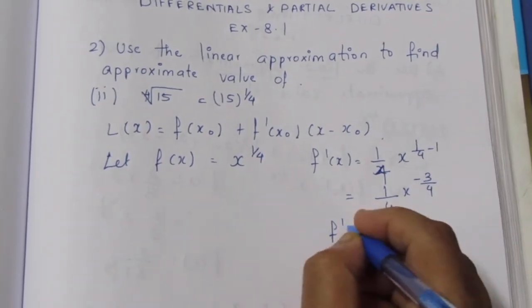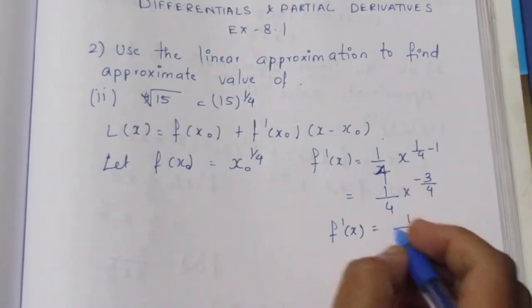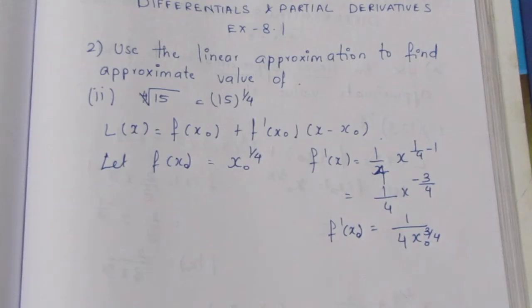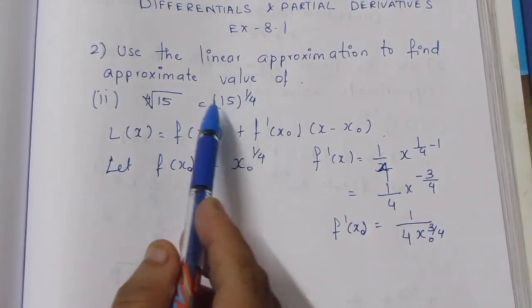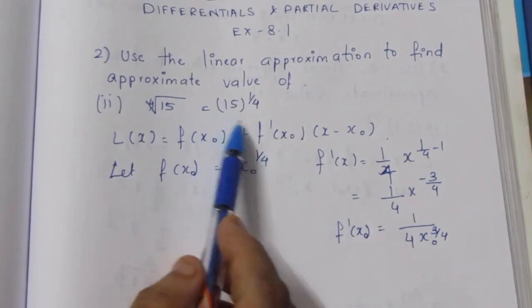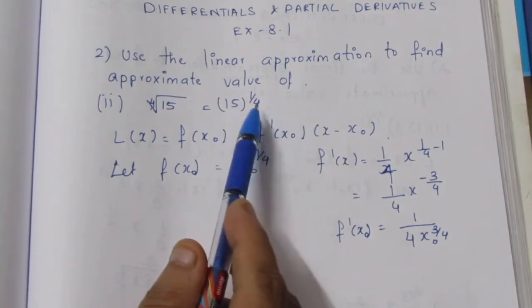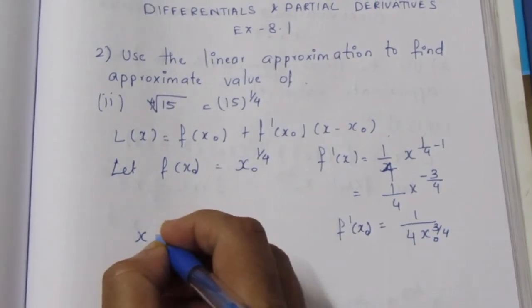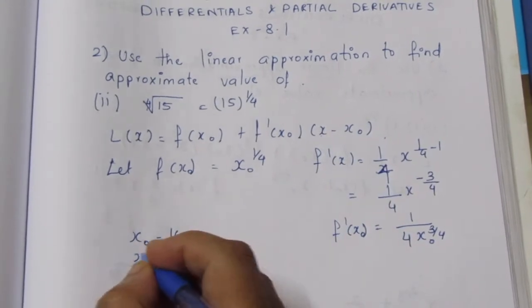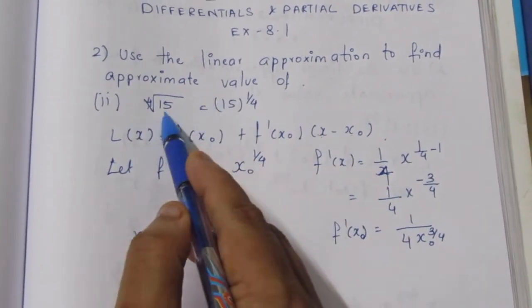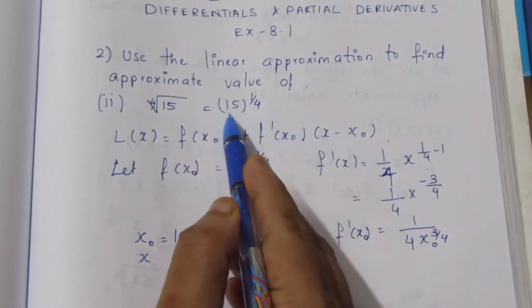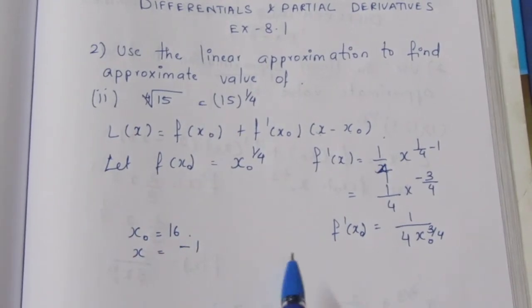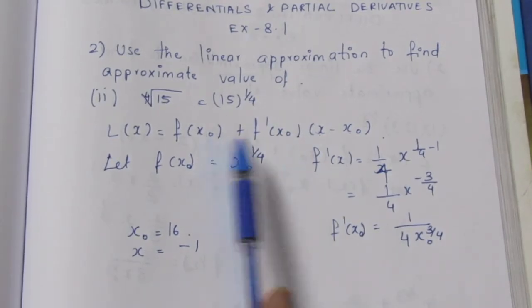So this is f'(x). Now f'(x0): x0 is 16. Why? Because the nearest perfect 4th root to 15 is 16, since 2 times 2 is 4, 4 times 2 is 8, 8 times 2 is 16 — so 2 to the power 4 is 16. So x0 equals 16. Then x minus x0 equals 15 minus 16, which equals minus 1.